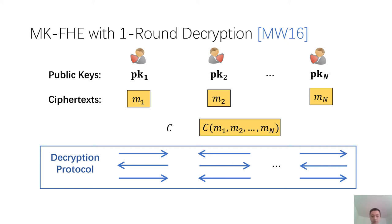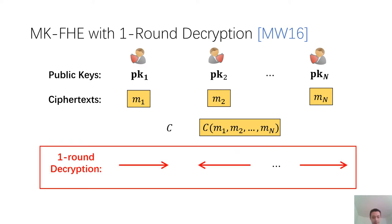Later, in the work of MW16, they proposed a multi-key FHE with one-round decryption property. So instead of doing a multi-round decryption protocol, in MW16 the decryption protocol is in one round, where each party outputs some partial decryption of the homomorphically evaluated ciphertexts. And finally, all the parties with these partial decryptions can publicly recover the output of the circuit.